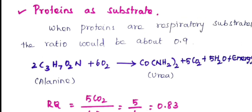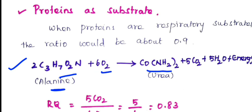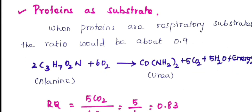Consider the respiratory substrate alanine. The formula for alanine is C₃H₇O₂N. The balanced reaction is: 2 C₃H₇O₂N plus 6 O₂ gives urea (CO(NH₂)₂) plus 5 CO₂ plus 5 H₂O plus energy.